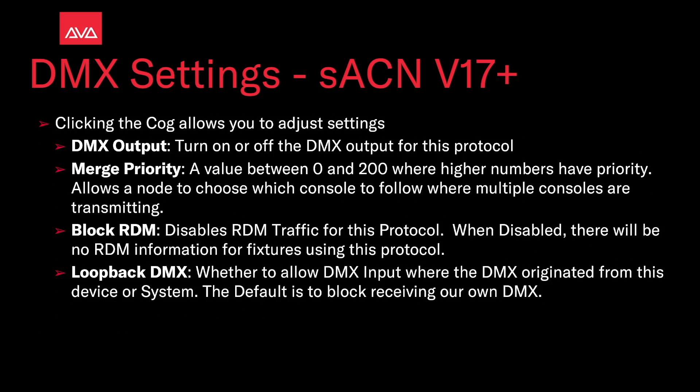To change your settings for Streaming ACN, click on the Gear icon in the DMX settings menu. With DMX Output, you can turn DMX on or off for this protocol — effectively turning off Streaming ACN as a whole. Merge Priority is a value between 0 and 200, where higher numbers have priority. This allows a node to choose which console to follow where multiple consoles are transmitting. Block RDM disables RDM traffic for this protocol; when disabled, there will be no RDM information for fixtures using this protocol.